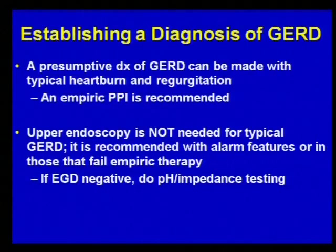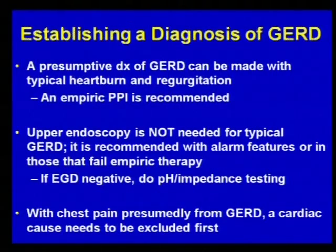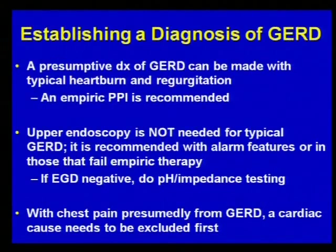Impedance testing detects not only acid regurgitation but fluid regurgitation whether acid or non-acid, because some patients on a PPI still have heartburn-related symptoms from non-acid reflux. Always remember that with chest pain — even if you think it's from reflux because of typical associated reflux symptoms — you always need to rule out a cardiac etiology before putting someone on a PPI trial. An eight-week trial is the therapy of choice, once a day in the morning, 30 to 60 minutes before the first meal, with probably no major difference between PPIs per the guidelines.